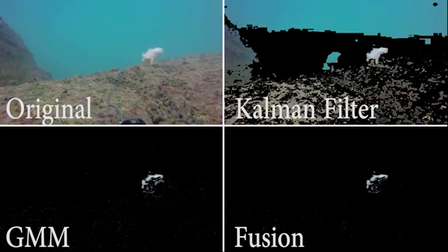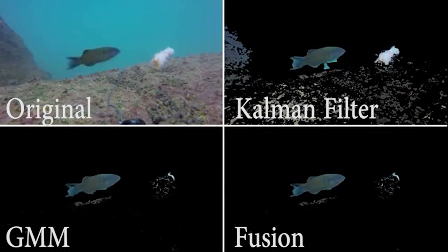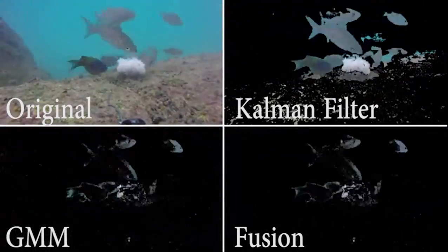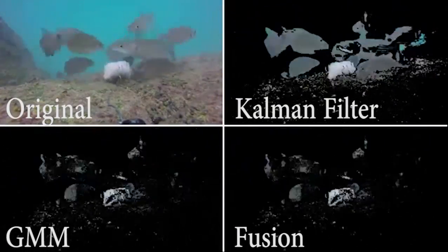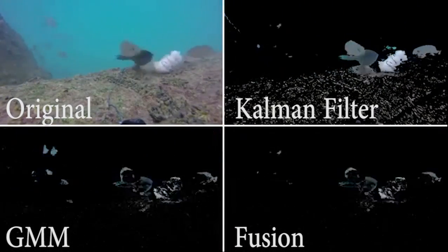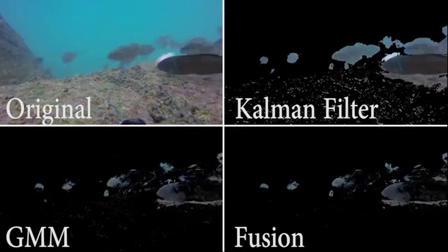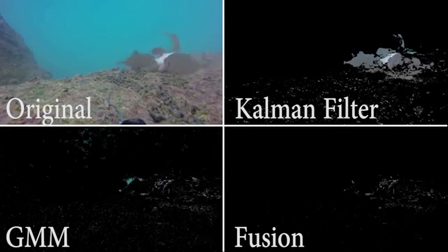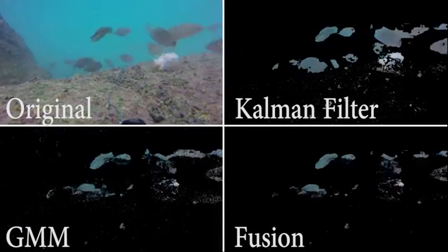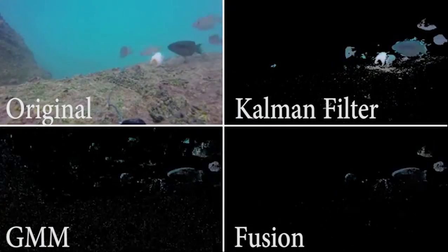As you can see, while each of our two algorithms does a decent job at identifying the foreground of the video, they both have their problems. Common filtering often leaves ghosts — portions of the background that the algorithm erroneously classifies as foreground after a foreground object stays in one spot for too long. In contrast, the Gaussian mixture model contains more noise, speckling the extracted foreground with misclassified pixels.